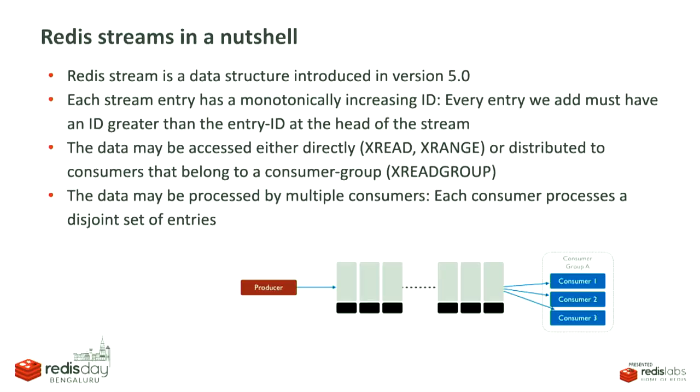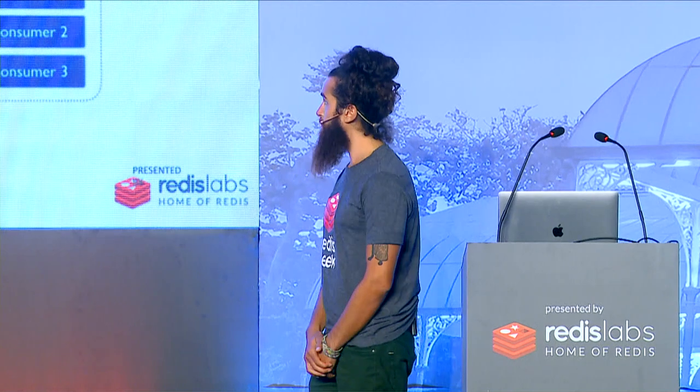Redis Streams is a data structure that was first introduced in version 5.0. It's basically an append-only list that gets entries that are kind of hash-like structures. Each entry has a unique ID, and the IDs have to be monotonically increasing. The data may be accessed directly by XREAD, XRANGE, or may be distributed to consumers that are part of consumer groups.